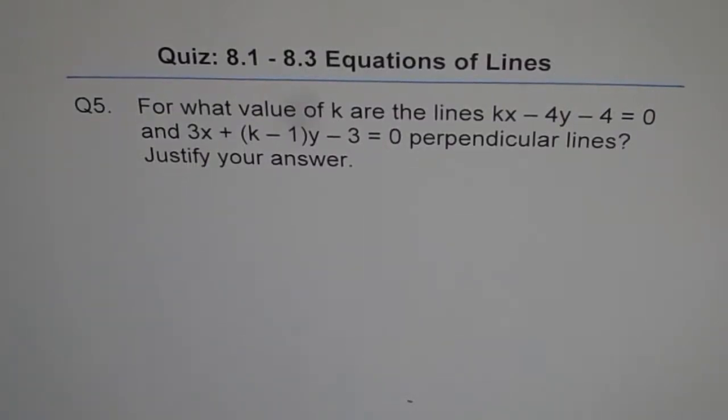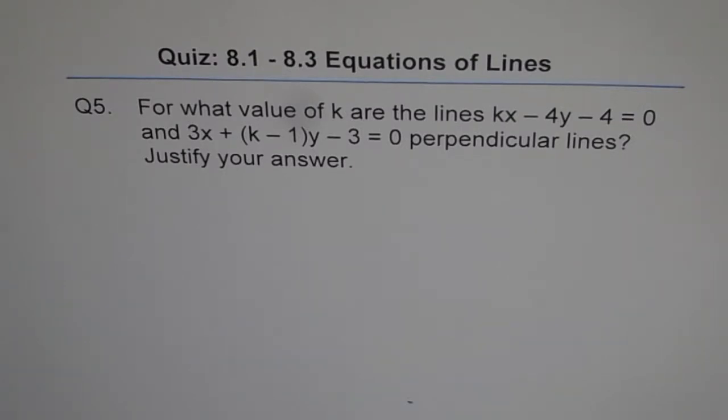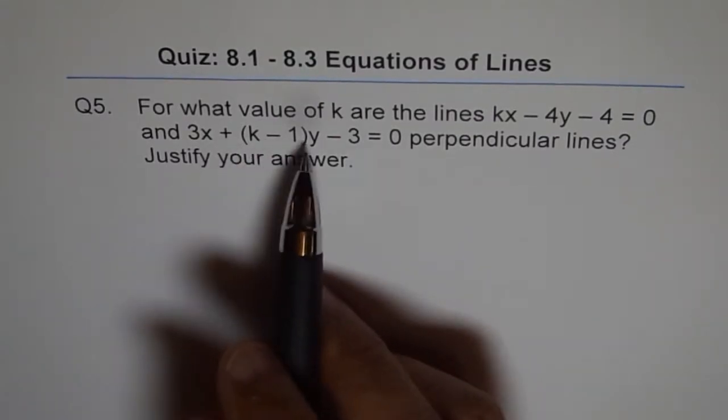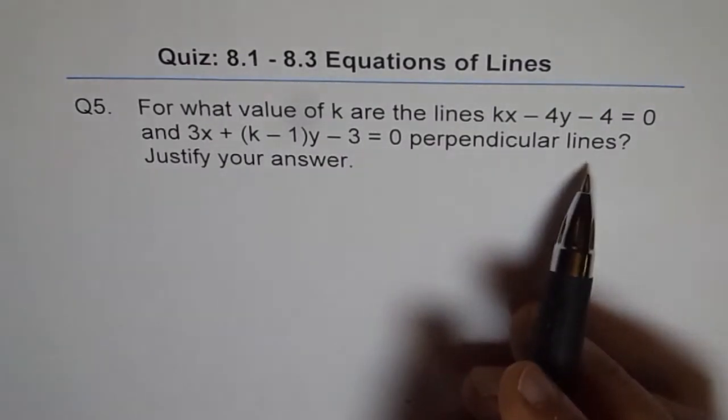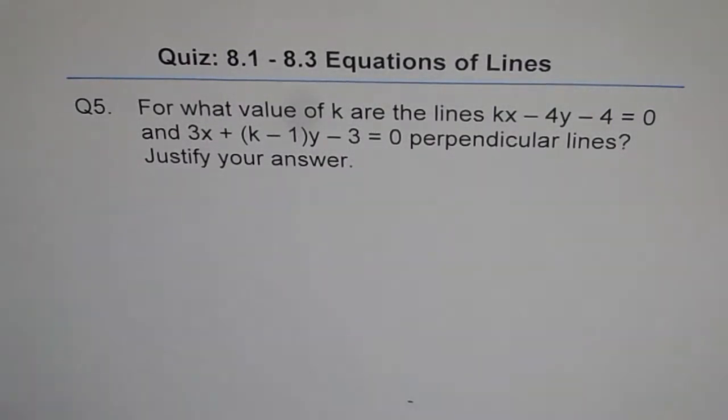Question 5. For what value of k are the lines kx minus 4y minus 4 equals 0 and 3x plus k minus 1 times y minus 3 equals 0 perpendicular lines? Justify your answer.